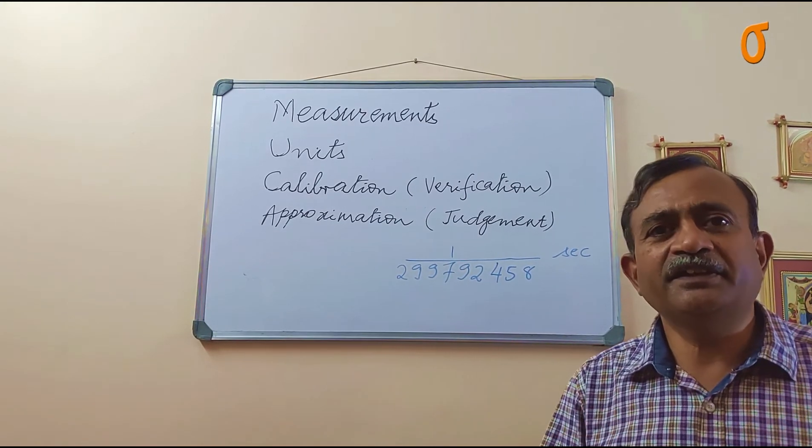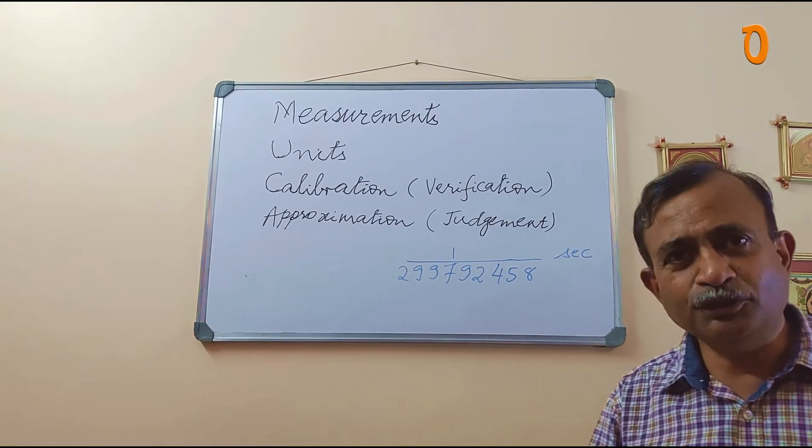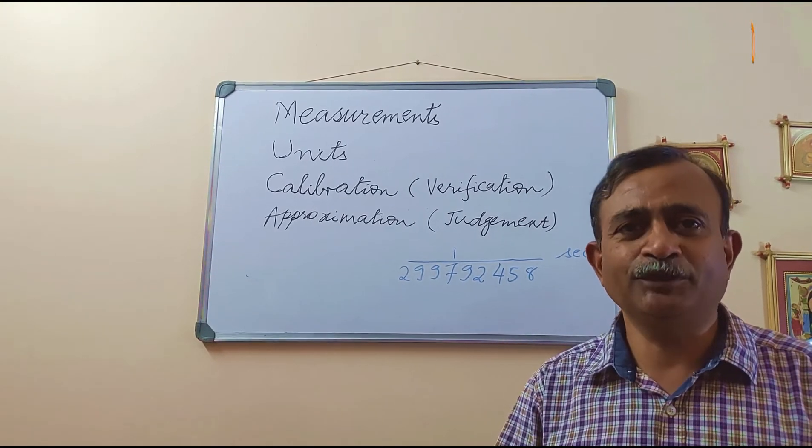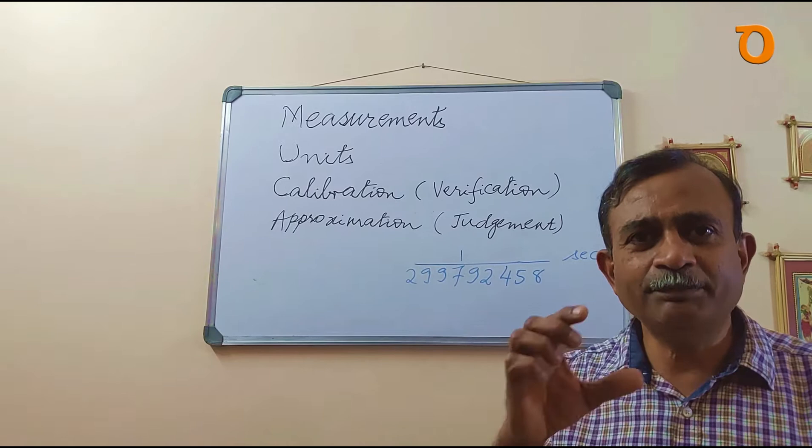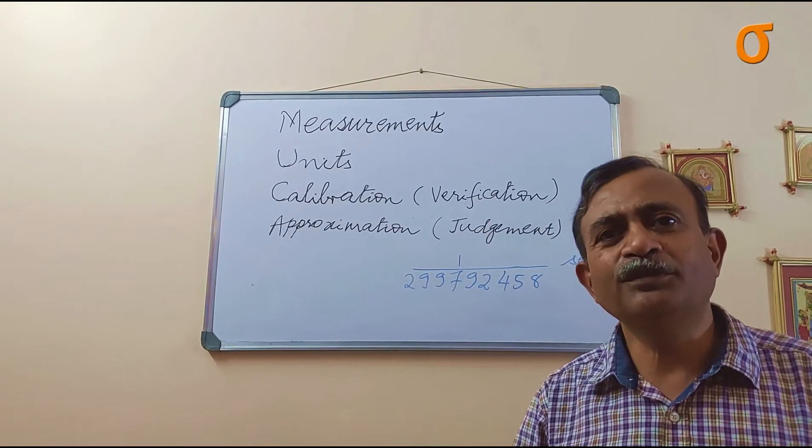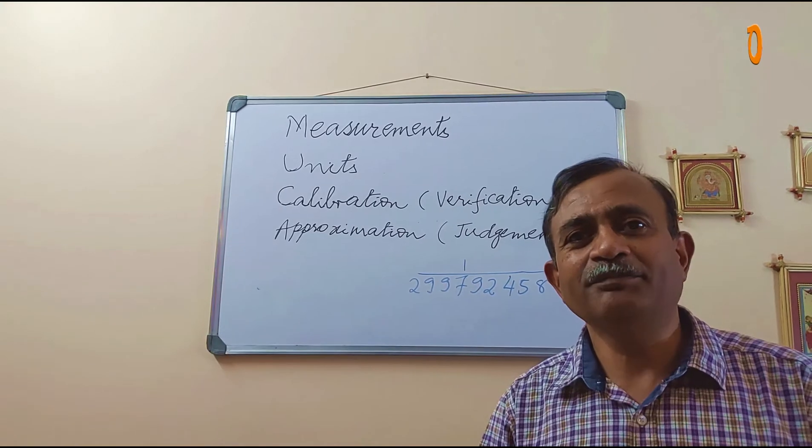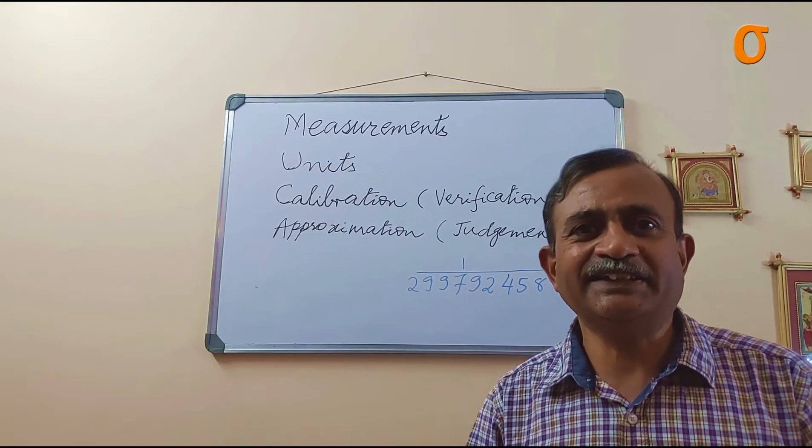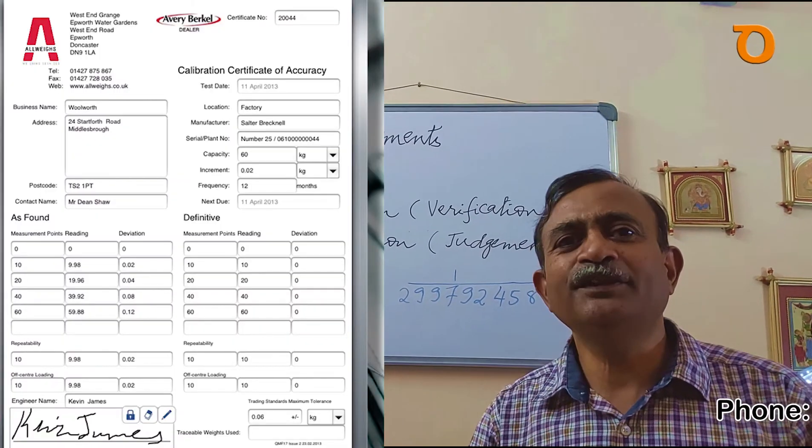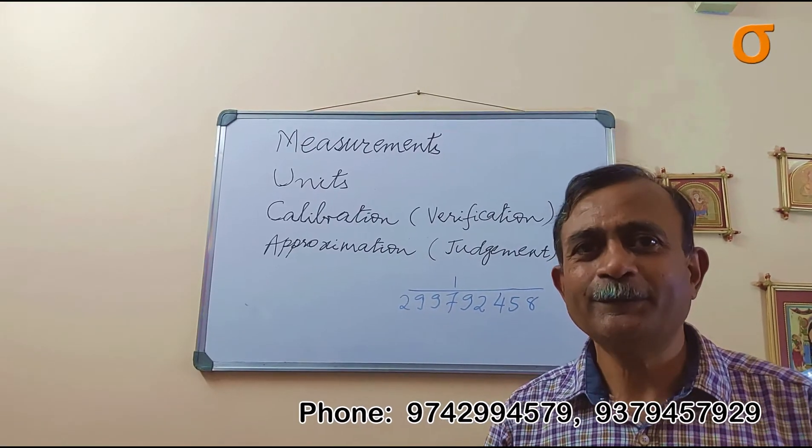As per the government rules, all devices which are used in transactions, where somebody is buying and somebody is selling, those devices have to be calibrated. The standard time or standard periodicity of calibration is 24 months. So next time when you go to a particular shop to buy something, for example a jewelry shop, you can ask whether his device is calibrated or not, when it was calibrated, by whom it was calibrated. And certainly if you go to a Titan showroom they show you the calibration certificate also.